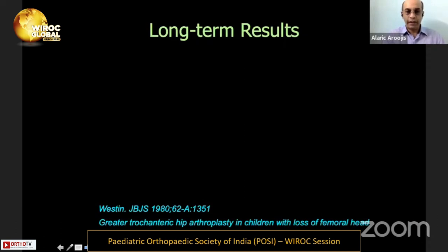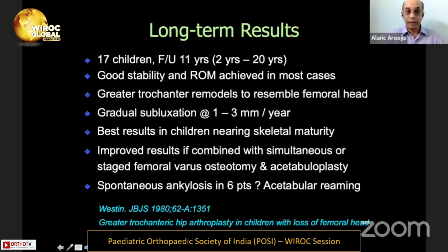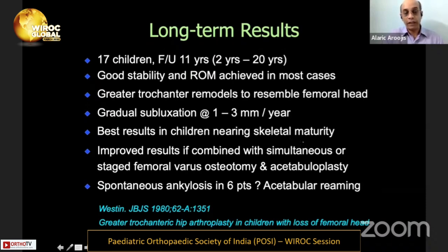One of the biggest reports came from Weston in 1980 on Colonna trochanteric arthroplasty — 17 children with follow-up ranging from 2 to 20 years. He found fairly good stability and range of motion in most cases. The greater trochanter surprisingly remodels to resemble the femoral head, though gradual subluxation as the child grows is a problem. Best results are seen near skeletal maturity, and combining trochanteric arthroplasty with simultaneous or staged femoral varus and acetabuloplasty gives the best outcomes.